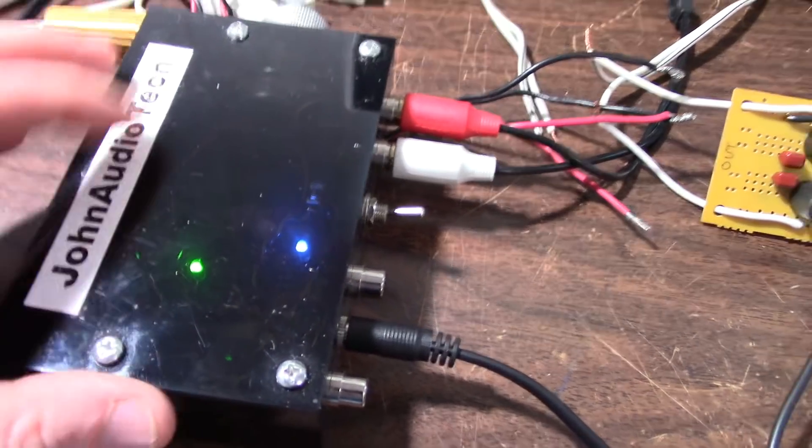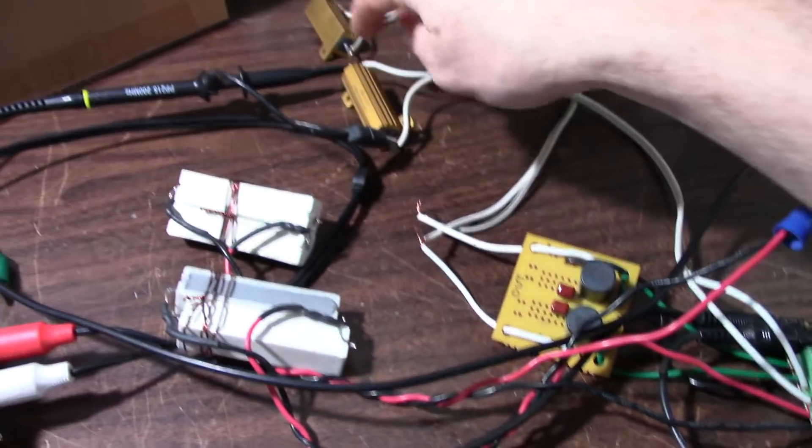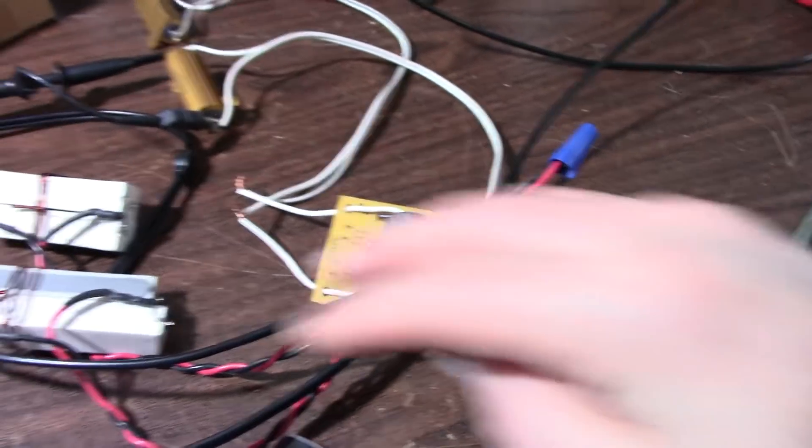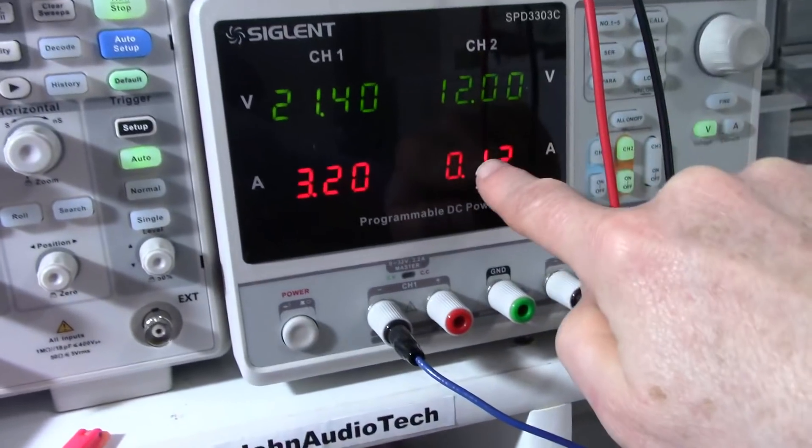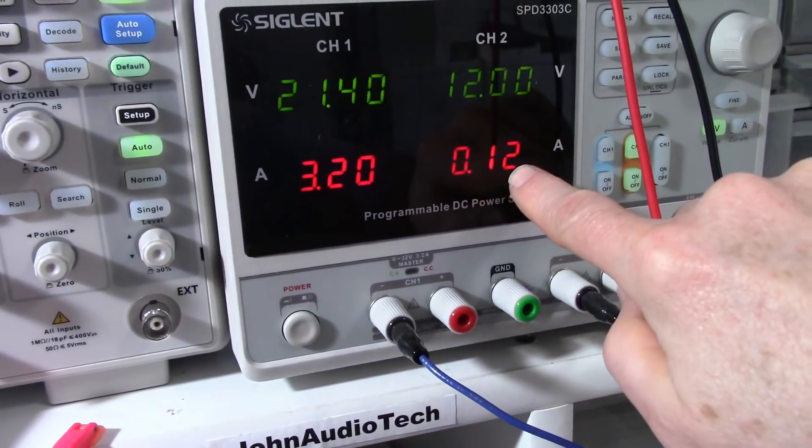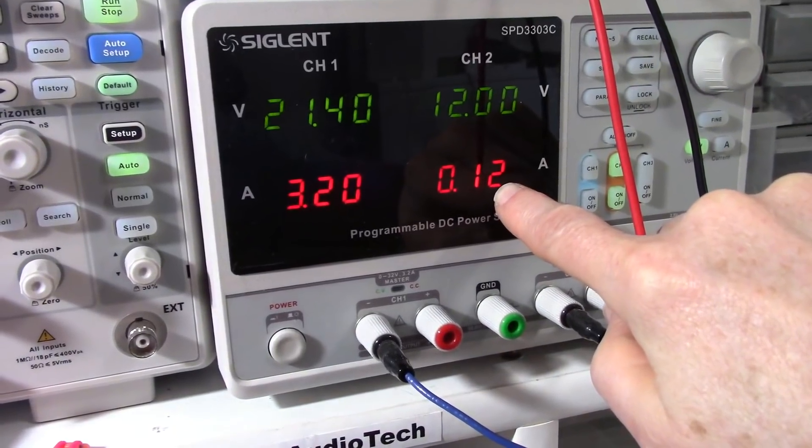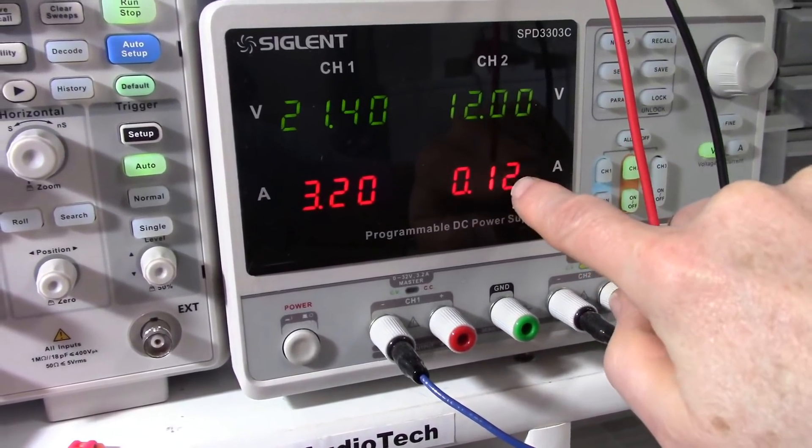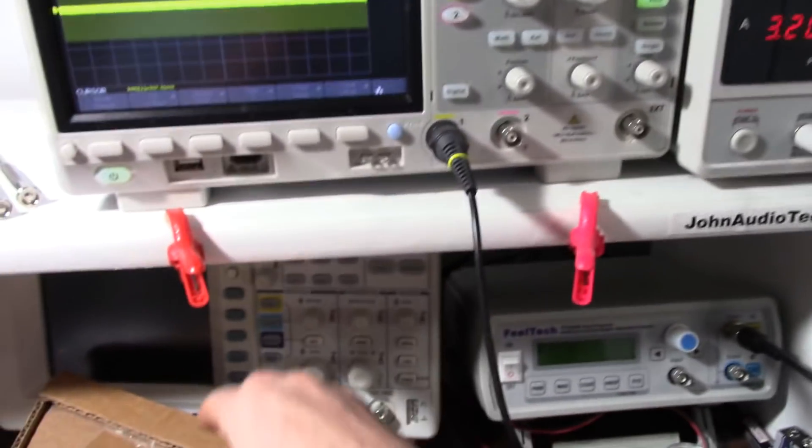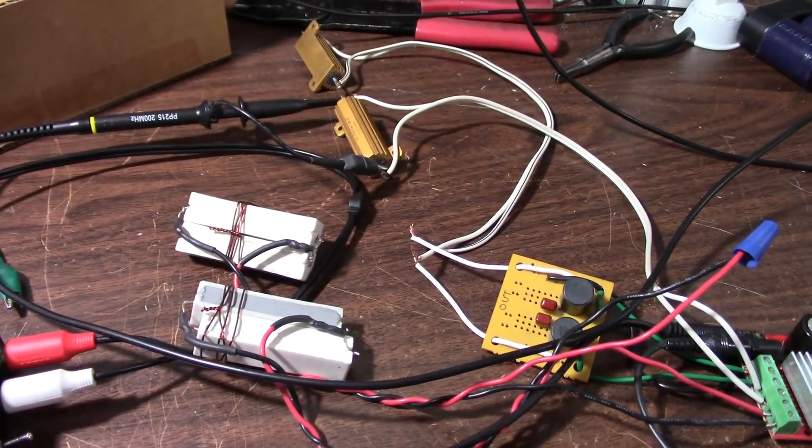I connected 8 ohm resistors to all the channels, non-inductive of course, and I have the power supply set up. Notice that the current has increased. Before when the amplifier was sitting idle with the speakers it was drawing only 70 milliamps, now it's drawing 120 milliamps. The inductance of the speaker coils is high enough that it doesn't pass the switching frequency of the amplifier which is around 330 kilohertz.